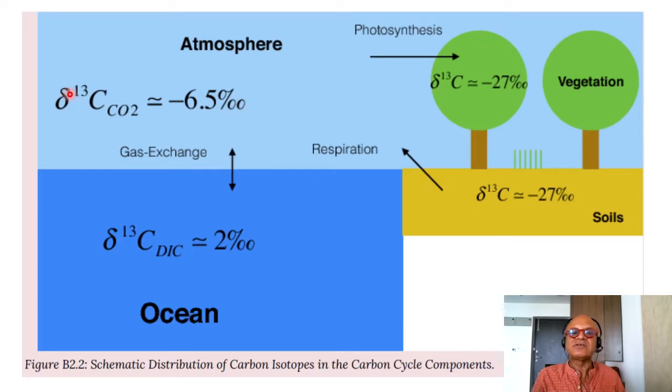So delta C13 is that comparison with the standard that we talked about. So photosynthesis fractionates that and creates a depletion or deficit of 27 parts per thousand. So that's what is in the vegetation. So that ends up being part of the soils as well. So soil carbon, which is basically what is being generated by photosynthesis and exuded through root systems, microbial system that's in the soil, is going to be at minus 27 parts per thousand. So respiration is going to add that fractionated carbon to the atmosphere.